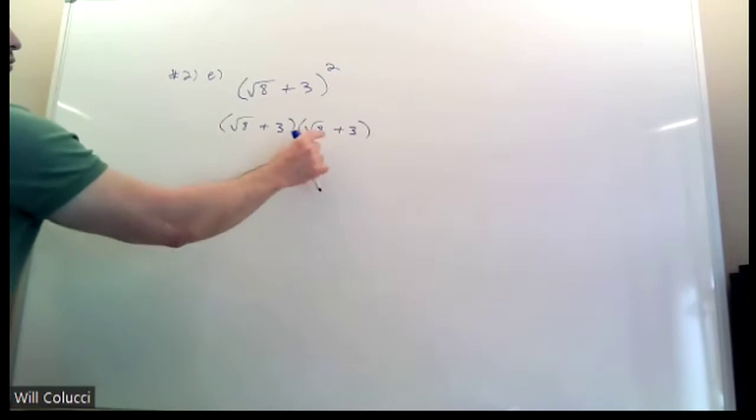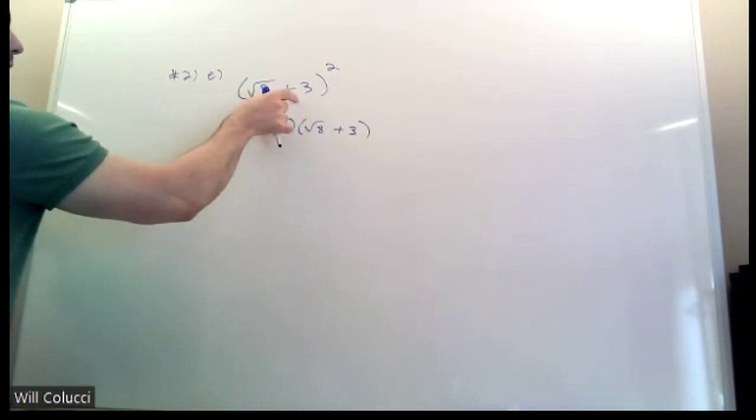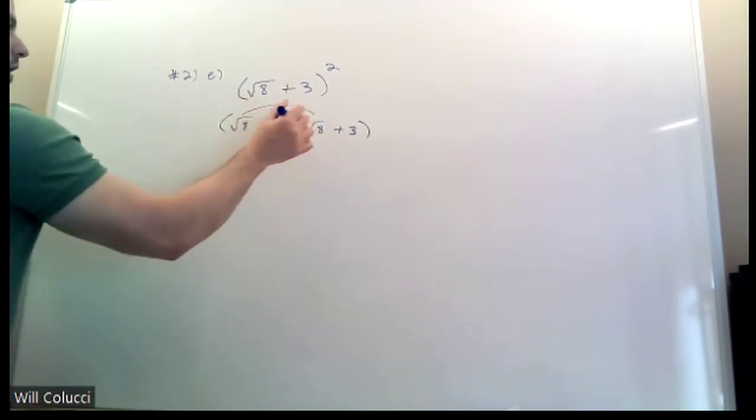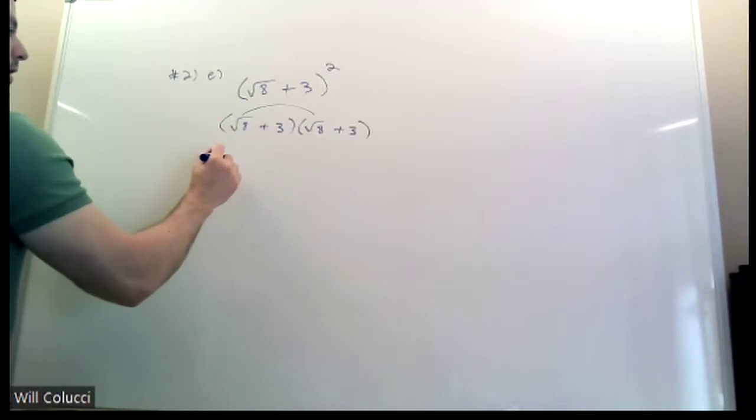What I see students do is switch this sign. They'll make this one negative for some weird reason. If you're multiplying it by itself, you're writing the copy. And now just do the FOIL. First, radical 8 and radical 8 make radical 64, which is 8.